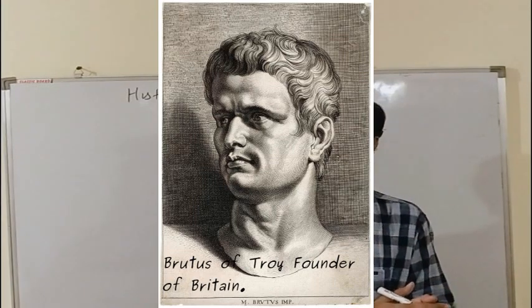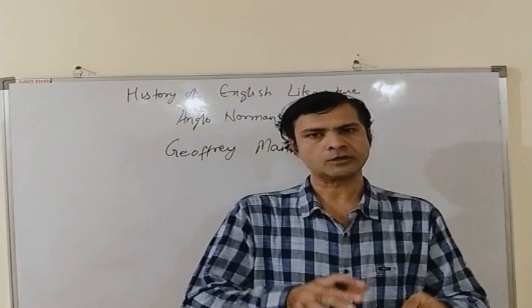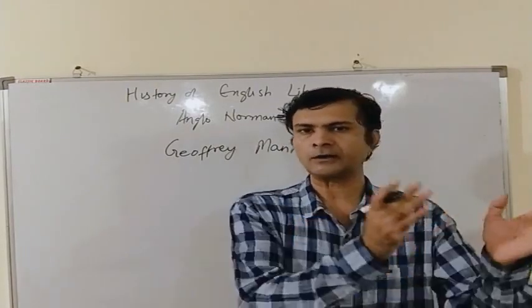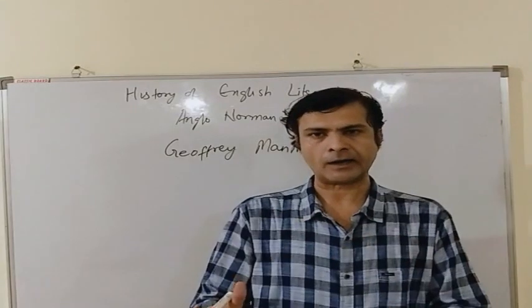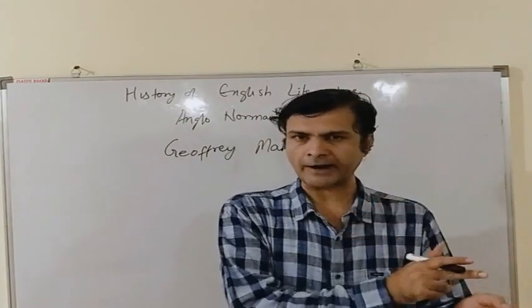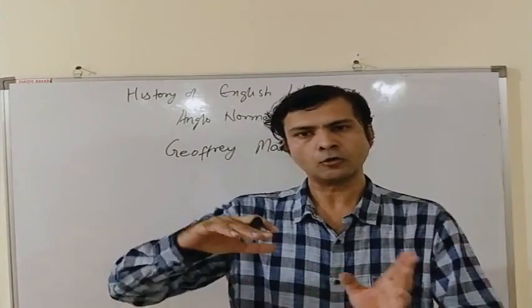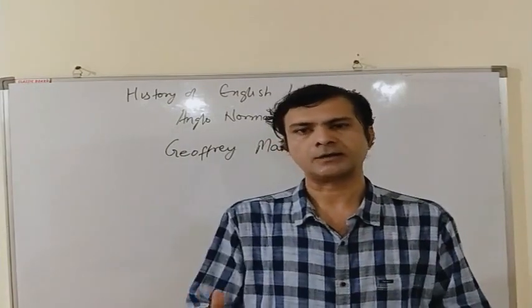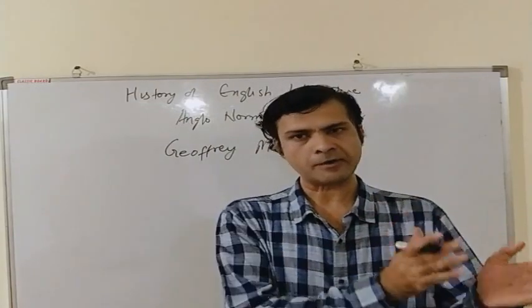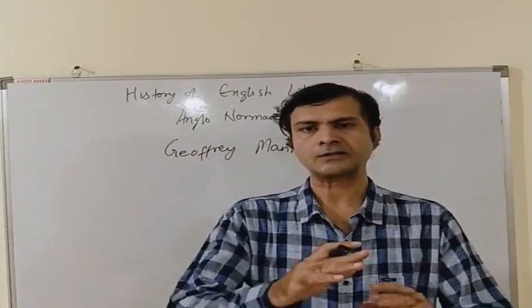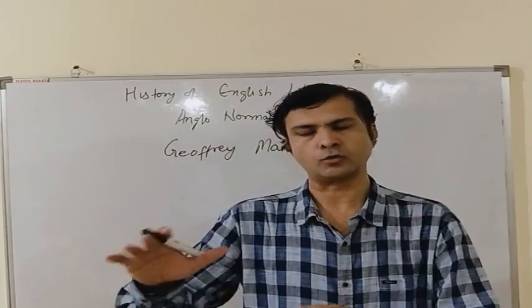Layamon also discusses King Lear and King Arthur in great detail. So the first work on King Arthur and King Lear was that of Geoffrey Malmoth, who wrote in Latin — the title was Historia Regum Britannia. Wace wrote in Old French and the title of his work was Roman de Brut. And Layamon wrote in Old English and the title of his work was Brute.